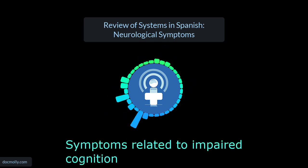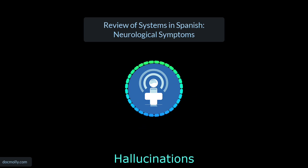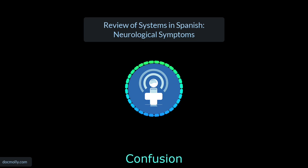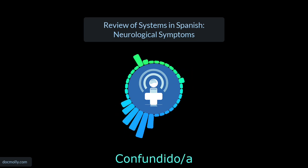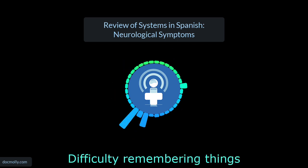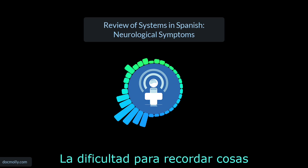Symptoms related to impaired cognition. Hallucinations — Las alucinaciones. Confusion — La confusión. Confused — Confundido, Confundida. Difficulty remembering things — La dificultad para recordar cosas.